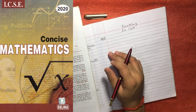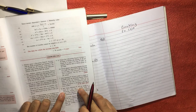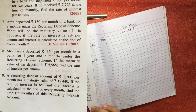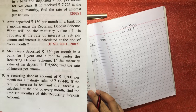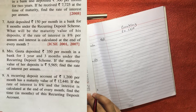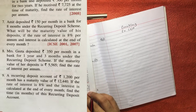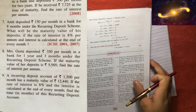Next question we are solving from Concise Mathematics, Chapter Banking, Exercise 2A, Question Number 8. The question says Mrs. Geeta deposited rupees 350 per month in a bank for one year and three months in a recurring deposit account. If the maturity value of her deposit is 5565 rupees, then find the rate of interest per annum.